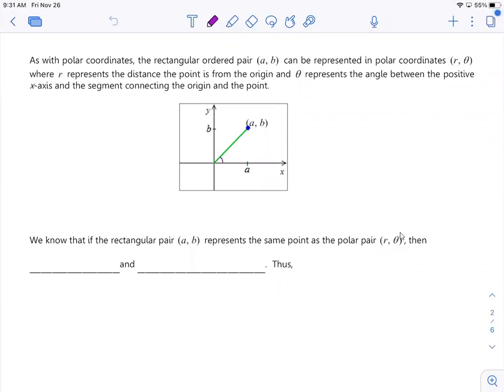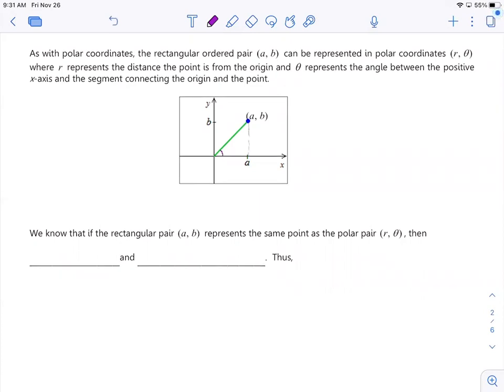Theta also represents the angle between the positive axes and the segment. So we talked about that in our polar coordinates video. Now if you were going to create a right triangle and you want to represent this distance, are you okay with the fact that it would equal A equals R times cosine theta?